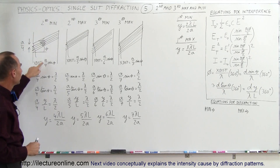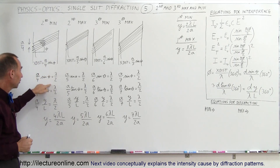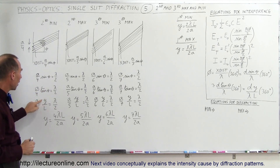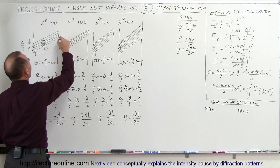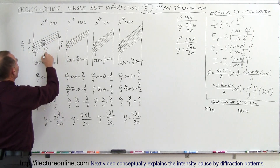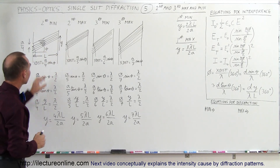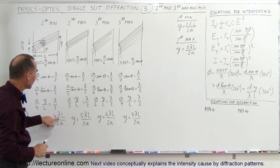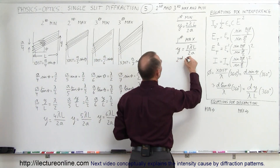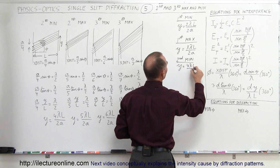If we calculate that the extra distance is A over 4 times sine theta, and we set it equal to lambda over 2 — the point of destructive interference — we replace sine by tangent, and the tangent is the opposite over adjacent: Y over L. This distance Y is where that minimum occurs, and L is the distance to the screen from the slit. We can then calculate Y, which equals 4 lambda L divided by 2A. So for the second minimum, Y equals 4 lambda L divided by 2A.